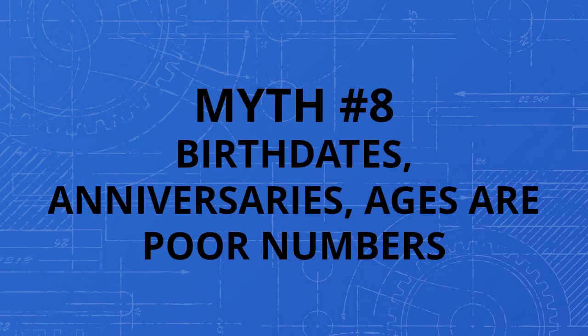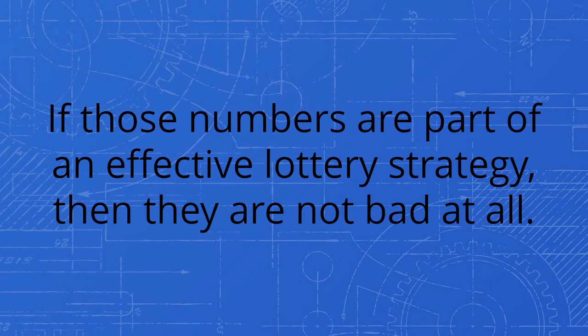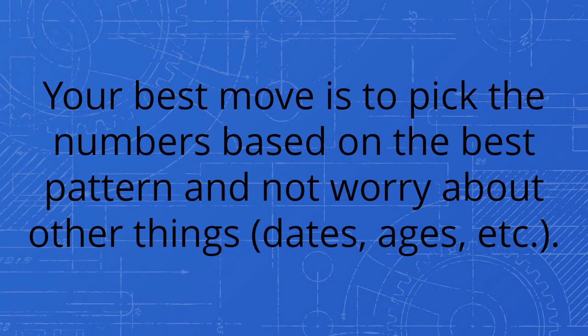Myth number eight: birth dates, anniversaries, ages are poor numbers. Some experts tell players to avoid them. If those numbers are part of an effective lottery strategy, then they are not bad at all. But if you don't know what you are doing, then those numbers become useless. Your best move is to pick the numbers based on the best pattern and not worry about other things—dates, ages, etc.